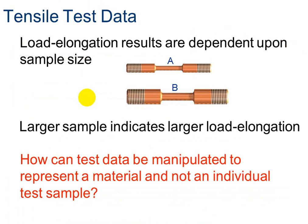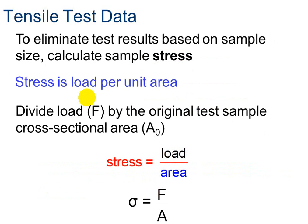So how can test data be manipulated to represent a material and not an individual sample? This is when we talk about stress and strain. To eliminate results based on sample size, we calculate stress, which is the load per unit of area. We divide the load (F) by the original test sample cross-sectional area. Remember, the sample is cylindrical. Here's your formula for stress — you'll want to write this in your notebook, along with the symbol sigma, which represents stress.